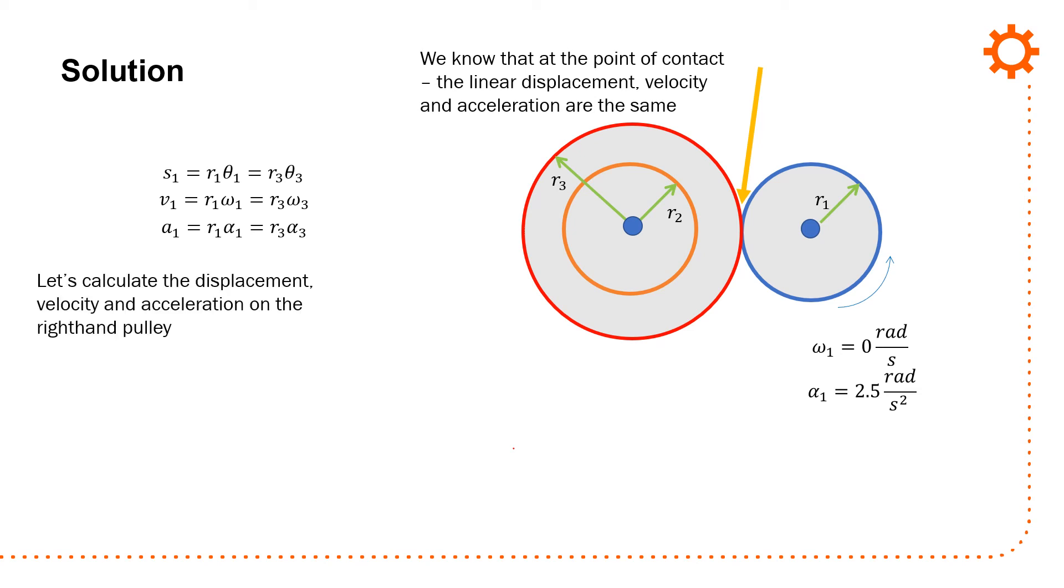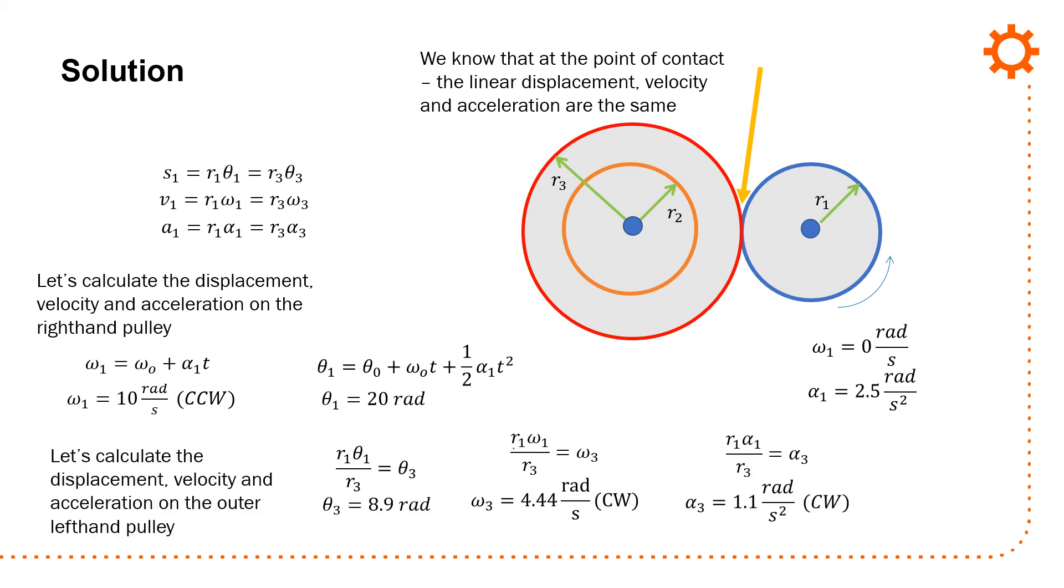So let's calculate the velocity and acceleration of the right hand pulley. So omega 1 after 4 seconds is going to be 10 radians per second, because we know what the acceleration is and that's been given at the beginning of the problem. Theta 1 is going to be 20 radians. Just substituting in zero, zero, and then two and a half times four seconds divided by two. You can use these relationships up here to calculate displacement, velocity, and acceleration. And you'll get theta 3 equals 8.9 radians, omega 3 equals 4.44 radians per second, and alpha 3 equals 1.1 radians per second squared. These two are counterclockwise, the other one clearly again counterclockwise.